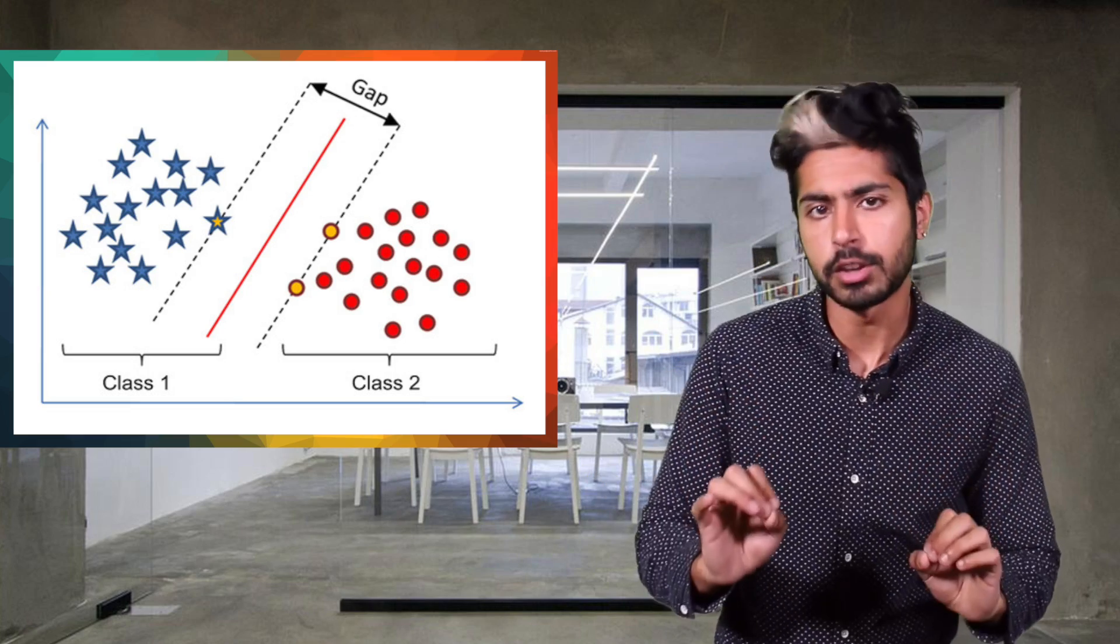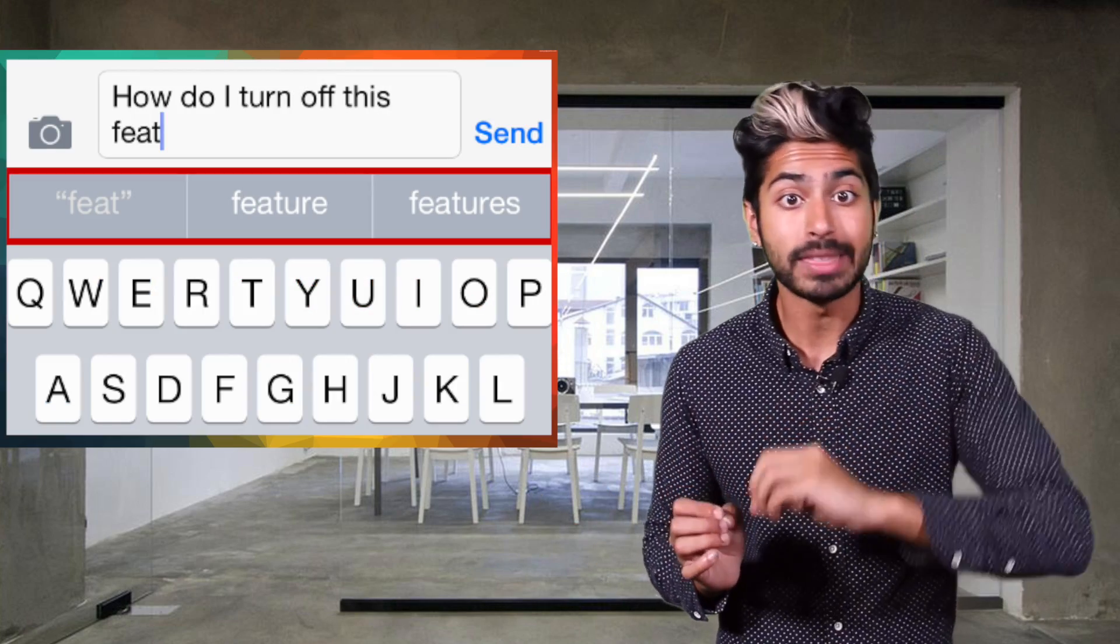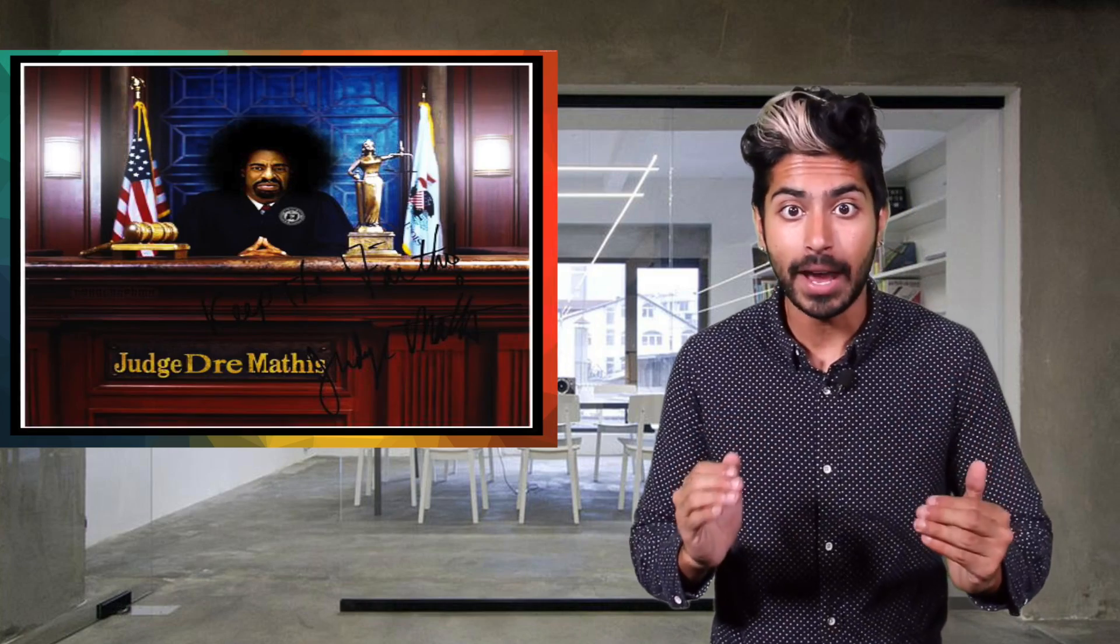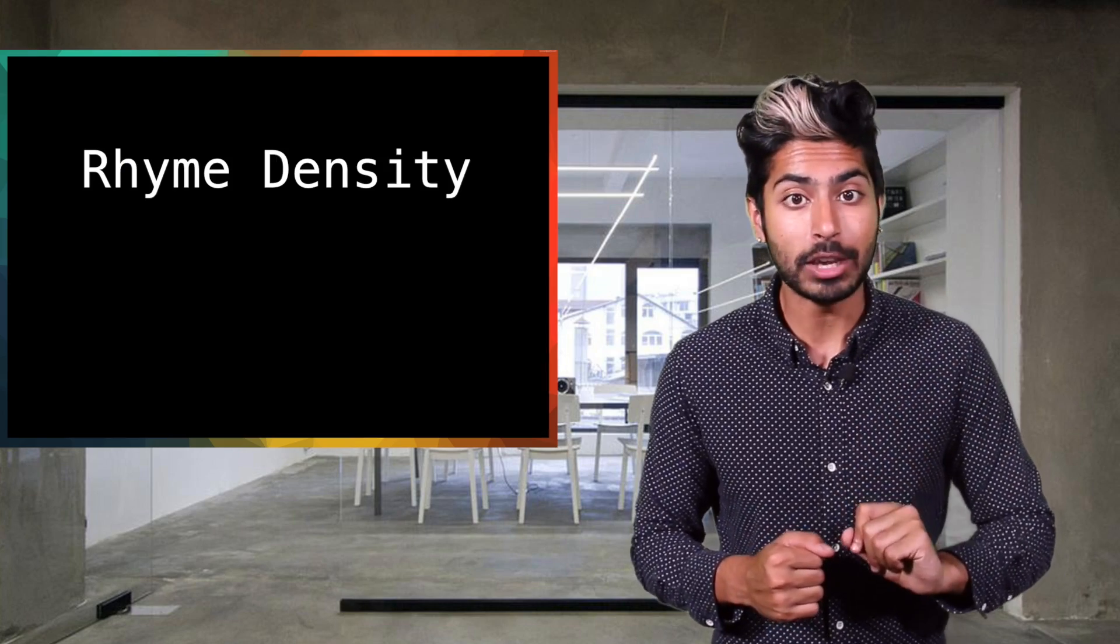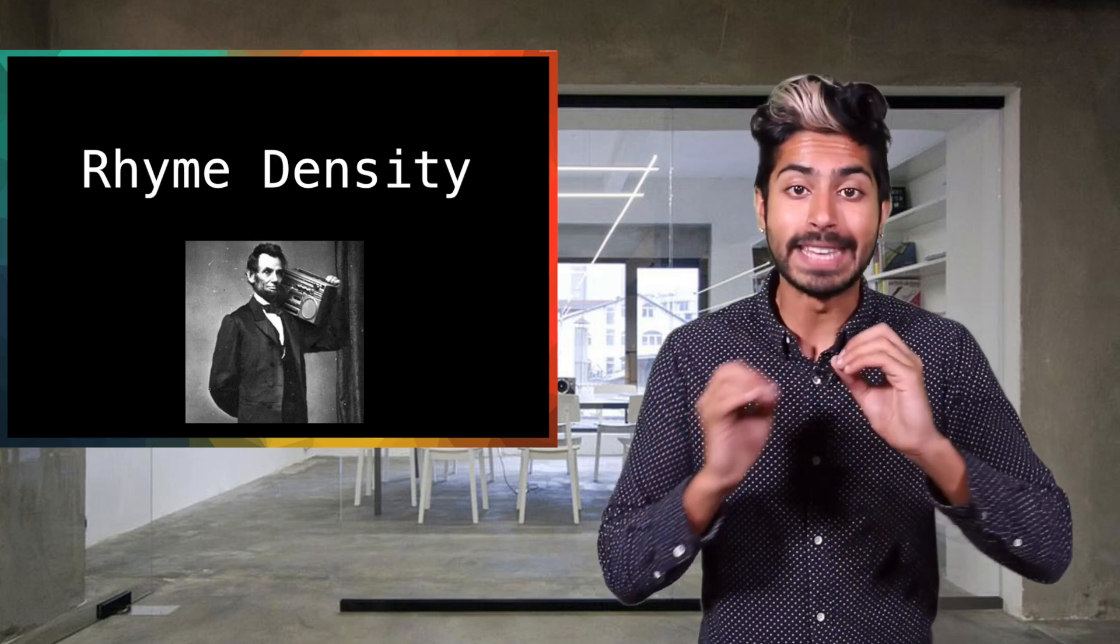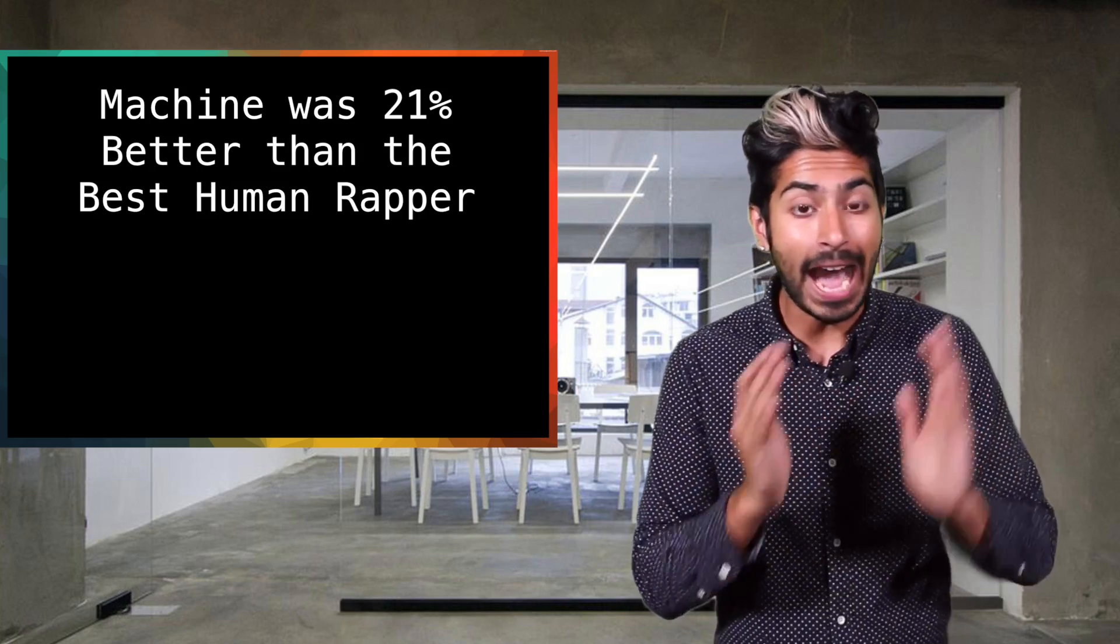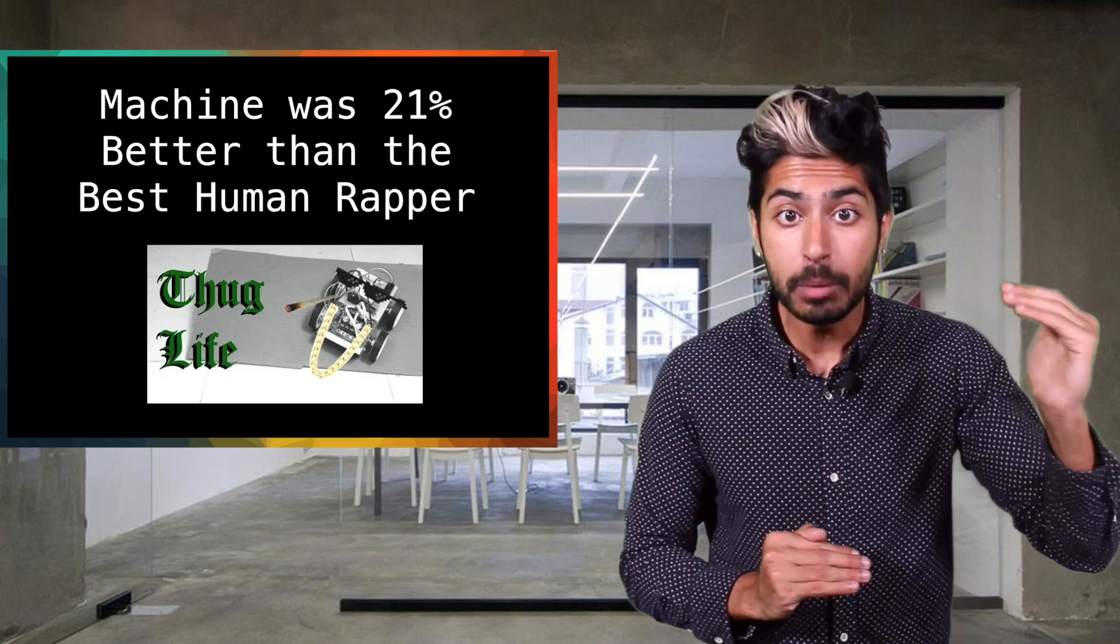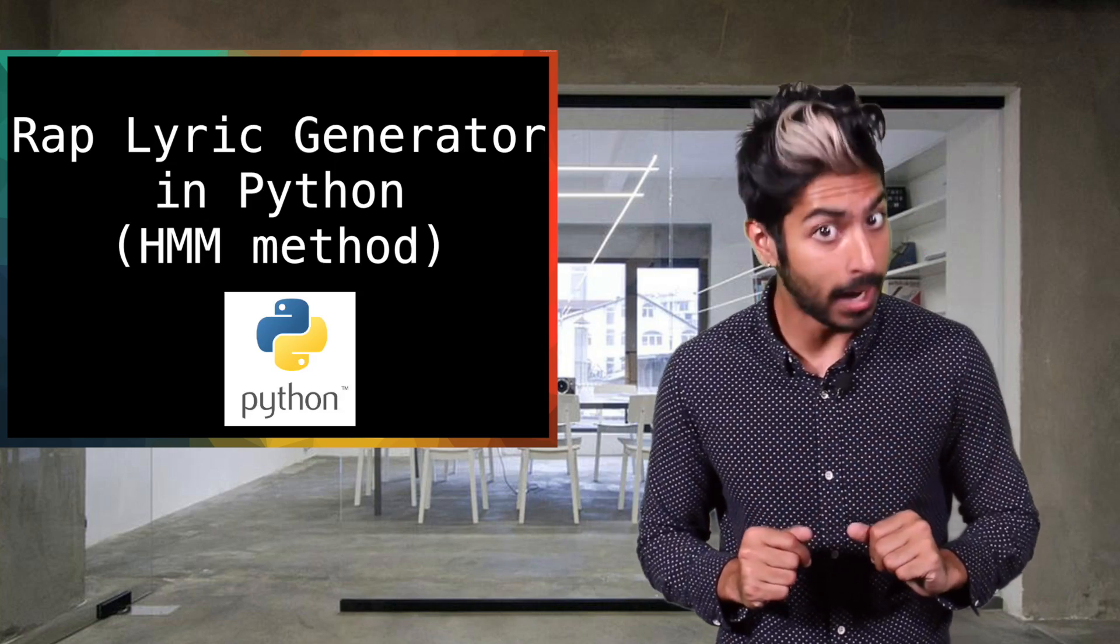Rank SVM is a support vector machine, by the way, which is just a type of linear classifier. And the SVM eventually learned to predict the next line once it was trained on the input features. They also wanted to find a way to quantify how good their algorithm was compared to human MCs. And so, they calculated something called rhyme density, which is the average length of the longest rhyme per word. Using rhyme density as a metric, they found that the algorithm's generated lyrics had a 21% higher density than the most rhyme-dense human artist on their list named Inspector Deck. Wait, who? Let's write our own rap lyric generator using a hidden Markov model in Python.